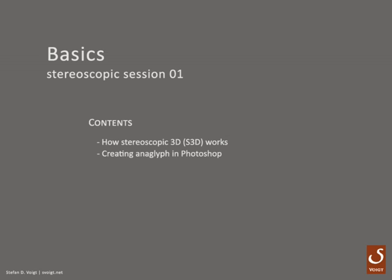After that I will show you how to create an optimized anaglyph with a trick from 3DTV.net — the guys who also created the stereoscopic player, which you should really download and use; it's a great tool. And after that I will show you how to use the After Effects plugin written by David Shelton, a friend of mine. He uses the optimized anaglyph algorithm developed by Peter Wimmer from 3DTV, which is also used in the stereoscopic player.